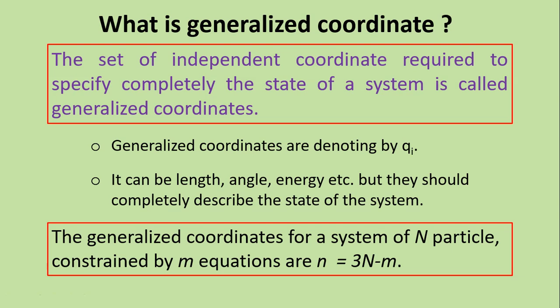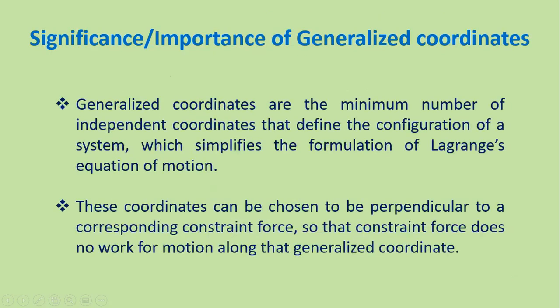In general, if there are N particles in three dimensions and the number of constraints is M, then the number of generalized coordinates is given by the equation: number of generalized coordinates = 3N − M.